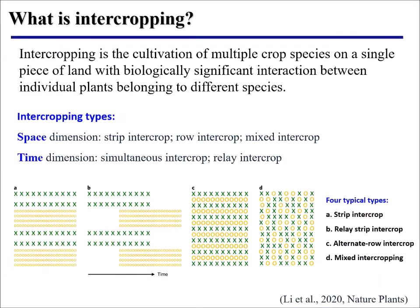The first question is: what is intercropping? Intercropping is the cultivation of multiple crop species on a single piece of land with interactions between species. There are many different types of intercropping according to time and space. Here we show four typical types. On the left, they call it strip intercropping — you can see there are two lines of one species and four lines of another species, growing as strips.